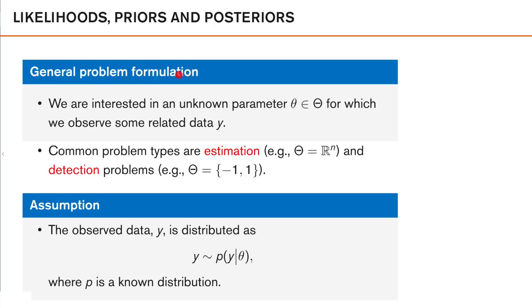The general problem formulation is that we're interested in an unknown parameter, theta, which is in some parameter space, capital Theta, for which we observe some related data, y. The type of parameter space will determine the type of problem. For example, it could be estimation where theta can take any continuous value — either a scalar or a vector — in which case the parameter space is R^n. Or it could be detection where capital Theta is either minus one or one, indicating if we have detected something or not.